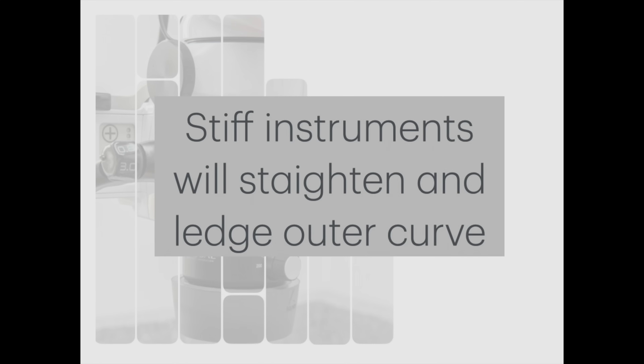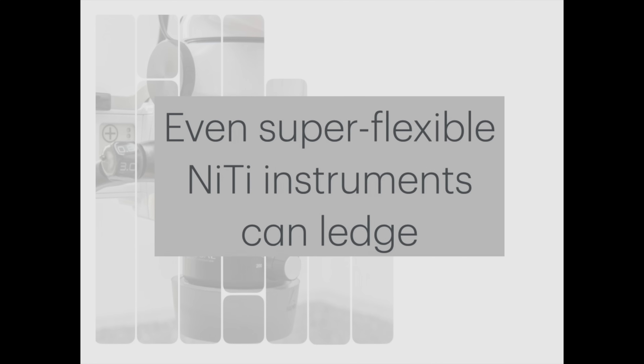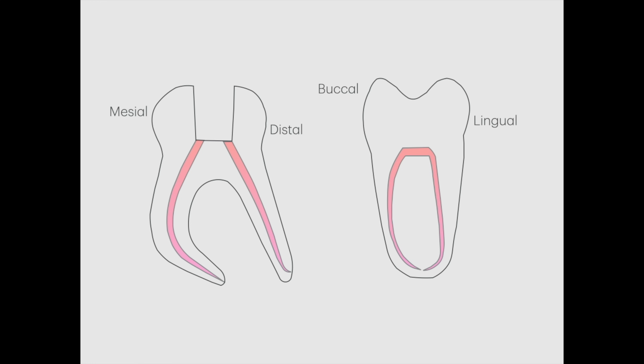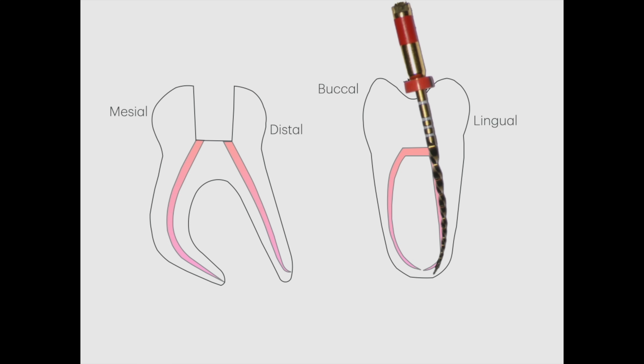Stiff instruments with a large restoring force will naturally try and straighten within the root canal, and so have a tendency to ledge the outer curvature if they're used with force. Even super-flexible nickel-titanium instruments, if worked in the same area or used inappropriately with excessive force, can ledge. Here in diagrammatic form, you can see how a ledge could form with a nickel-titanium instrument in the apical zone where there's an acute curvature, and with a stiff instrument in the mesial canal where it's used with force.